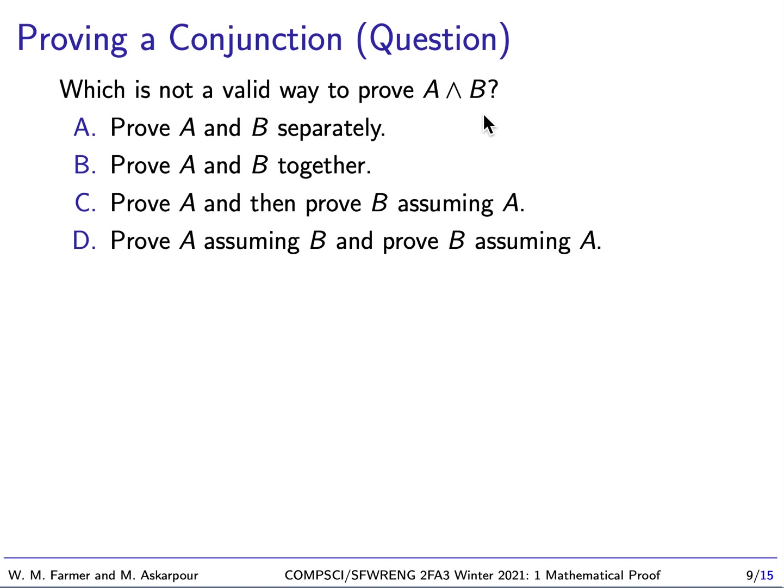Okay, welcome back. A conjunction is basically putting two statements together, and we will say the conjunction is true if both of the individual statements, the conjuncts, are both true. So in order for A and B to be true, A must be true and B must be true.